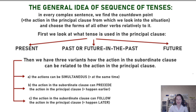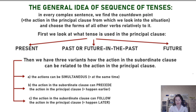We are going to have three types of situations, three types of cases, based on what we have in the principal clause. First, we can have a present tense, which will usually imply a present time context. Then we can have a past tense or future-in-the-past tense, which is very characteristic of a past story.